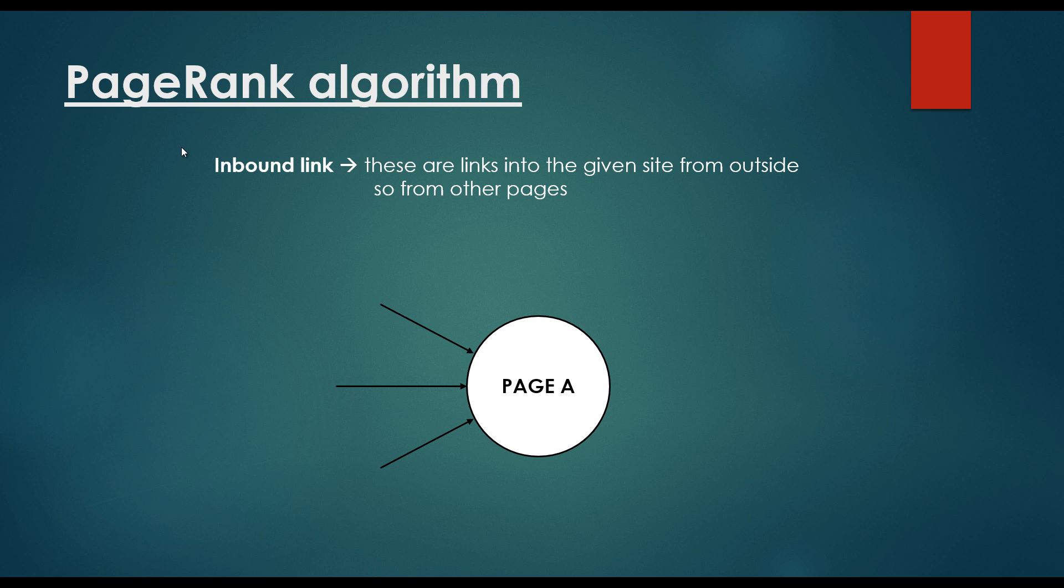So very important, there are three different types of links. We have the inbound link. These are links into the given site from outside, so from other pages. So for example, if we have a given page, then there are several incoming edges, incoming connections, and these are called inbound links.